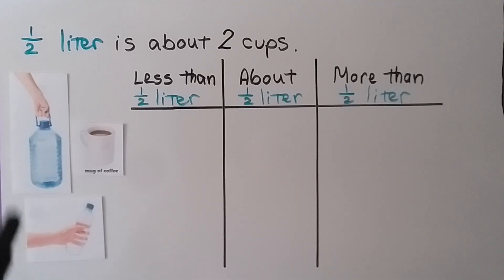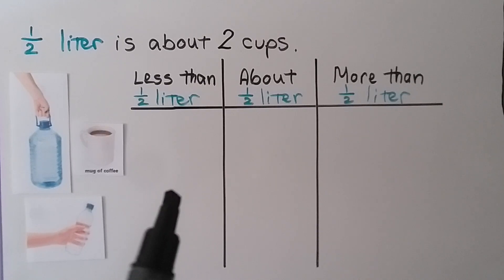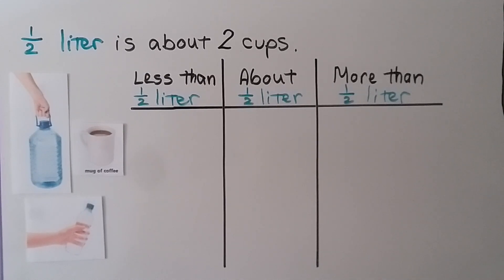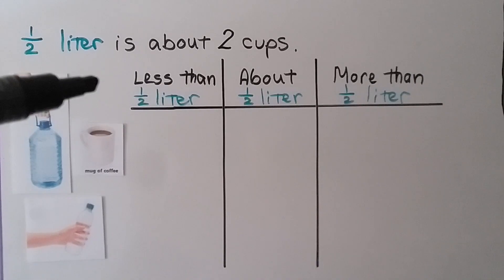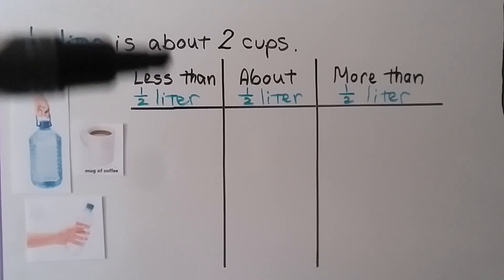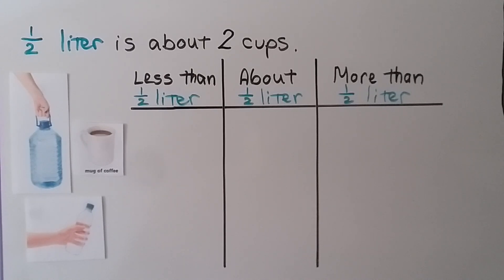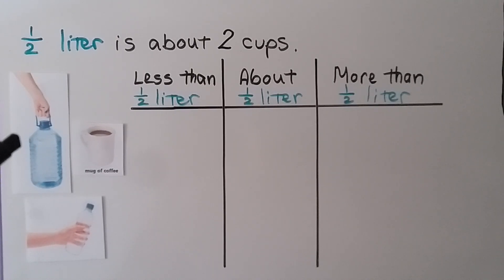We need to put these pictures in the correct column: less than half liter, about a half liter, or more than a half liter. Do you think this container of water is less than a half liter, about a half liter, or more than a half liter, knowing that a half liter is about two cups? I think that's a lot more than two cups, so I think that's more than a half liter.